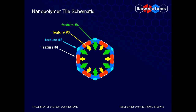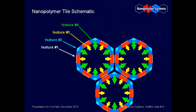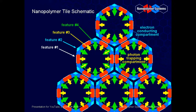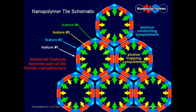Since feature number one is devoted to nanotube bundling, there are three additional functionalities that can serve additional purposes. For a photovoltaic system, interior feature number four could be a redox active doping agent, feature number three could be a chromophore dedicated to absorbing photons, and exterior feature number two could be dedicated to forming an electron conduction pathway. With the NSC polymer system, polyfunctionality can be built into complex nanostructures at the monomer level.